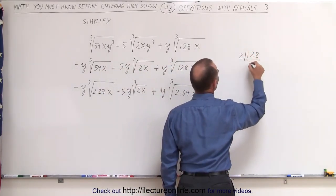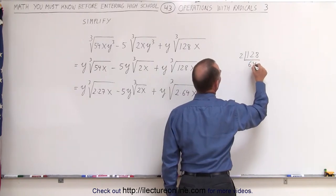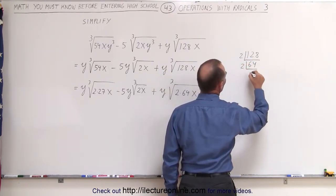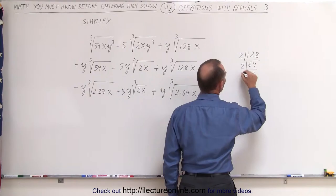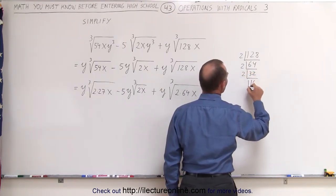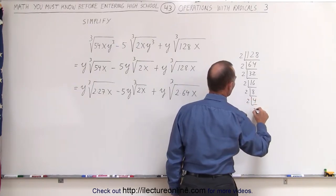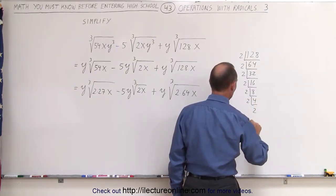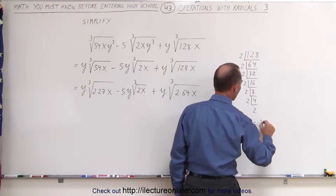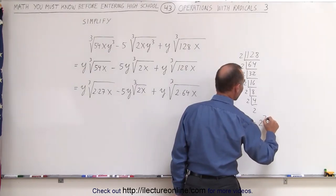128 can be divided by 2 to give us 64, divided by 2 to give us 32, divided by 2 to give us 16, divided by 2 to give us 8, divided by 2 to give us 4, divided by 2 to give us 2. In other words, 128 is the same as 2 to the 7th power?